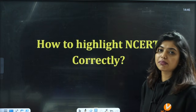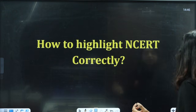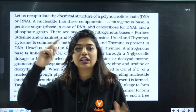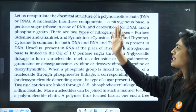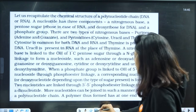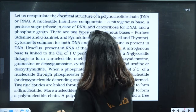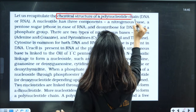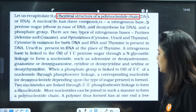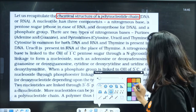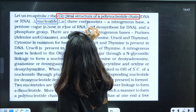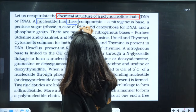One of the difficult chapters in biology is genetics. So in genetics, in the entire paragraph, I will highlight it. Let us recap the chemical structure of a polynucleotide chain. In the polynucleotide chain, what is it made up of? They are saying that it is made up of nucleotides. The nucleotide has how many components? They have told three components.